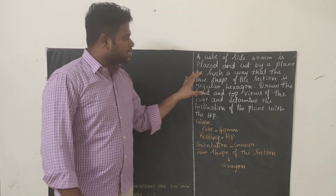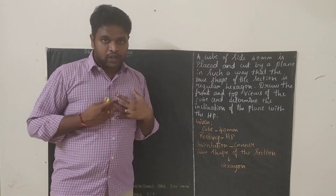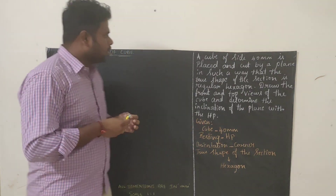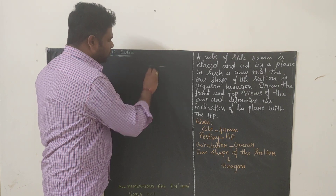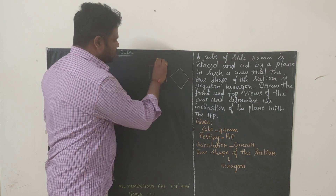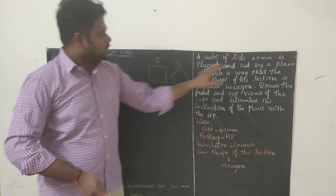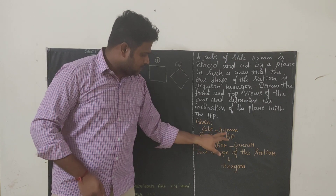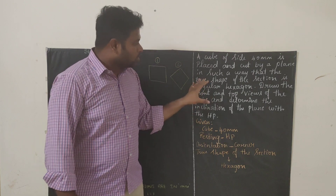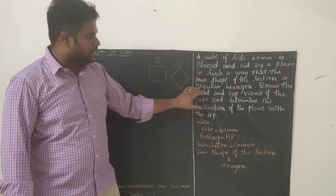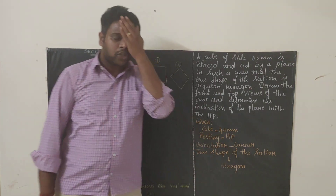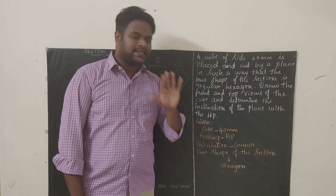A cube of side 40mm is placed. We are going to draw a cube — cube means the base diagram will be a square, and each side will be 40mm. The cube is cut by a plane in such a way that the true shape of the section is a regular hexagon. So we should cut the cube in such a way that we get the true shape as a hexagon.